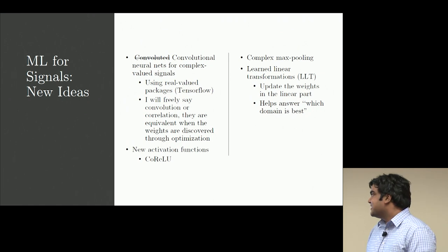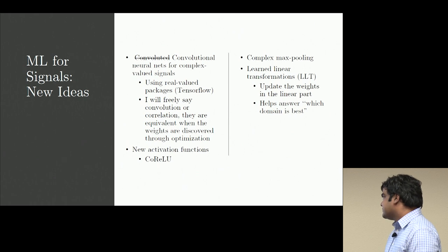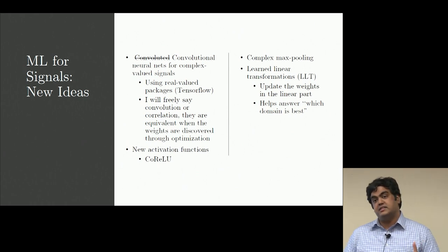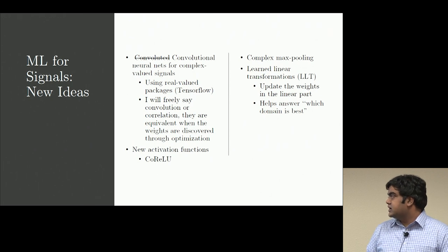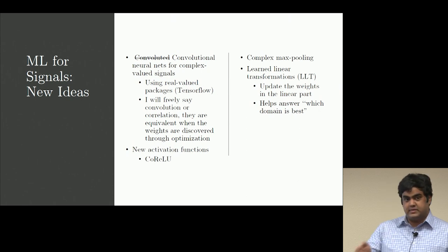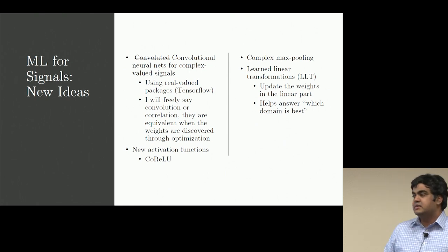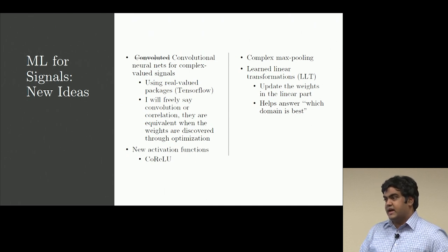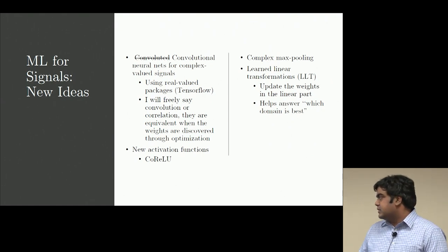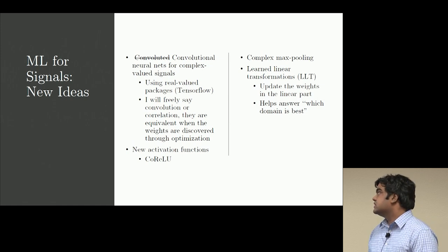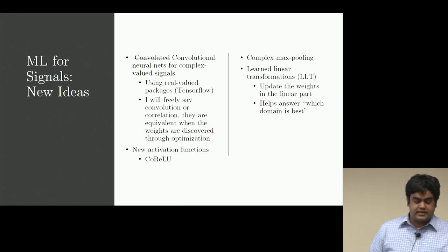Today's topic is new ideas for RF signals — specifically complex-valued CNNs. The question is: we have IQ data that's inherently complex with a two-dimensional structure. How do you do neural nets that respect the complex nature of that data? We came up with a new activation function I call the CoReLU. We also explored complex max pooling — once you see how CoReLU works, you'll understand how that works too — and learned linear transformations.